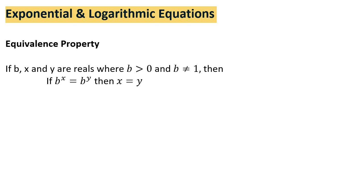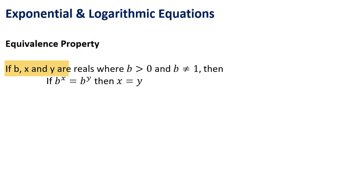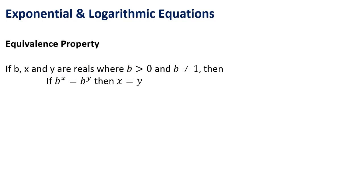Exponential and logarithmic equations. We begin with the equivalence property: if b, x, and y are reals, b is positive and not 1, then b to the power x equals b to the power y implies that x equals y.